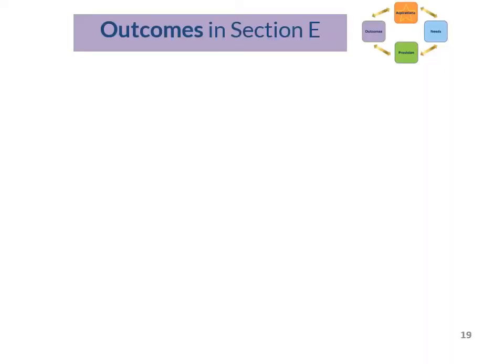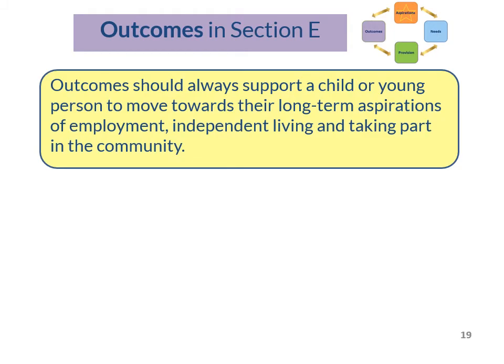Outcomes are in Section E of your child's plan. An outcome is what your child will be able to do in the agreed set timeframe with the support of the EHC plan. The SEND Code is clear that outcomes should always support a child or young person to move towards their long-term aspirations of employment, independent living and taking part in the community. So they can include wider outcomes for developing positive social relationships, emotional resilience and stability.